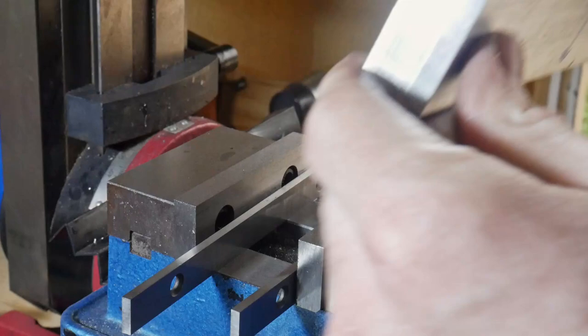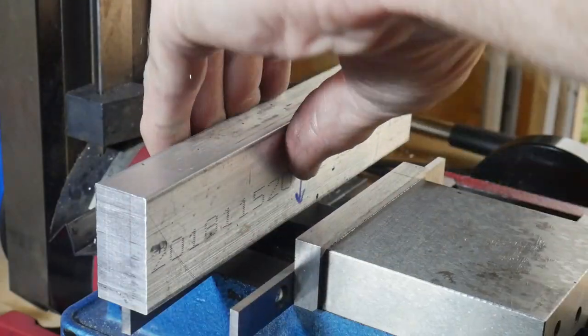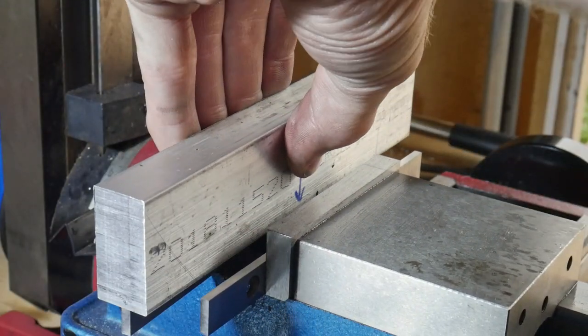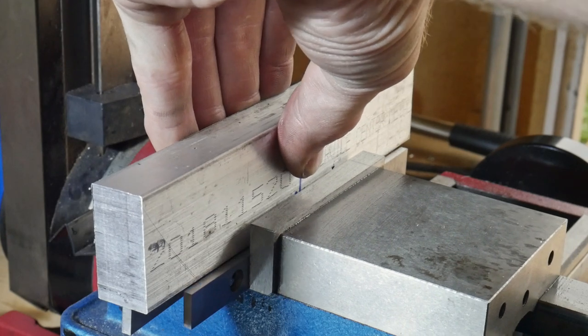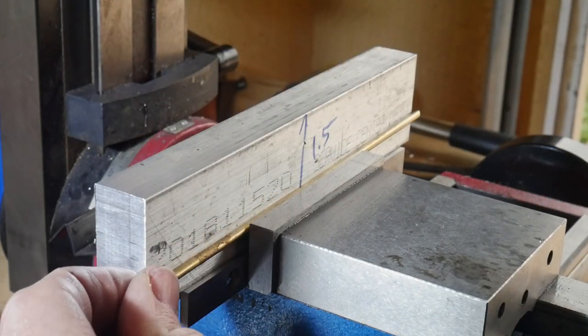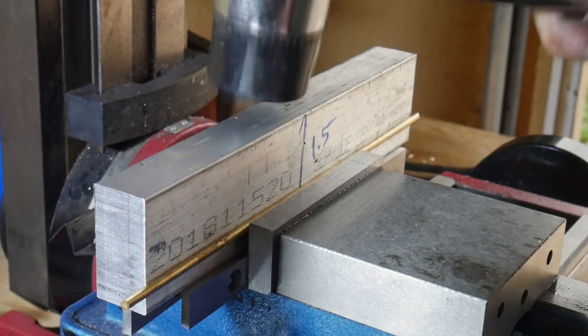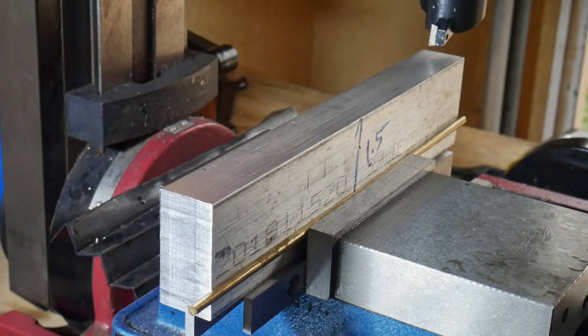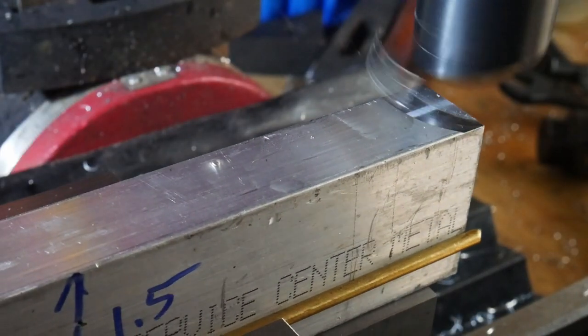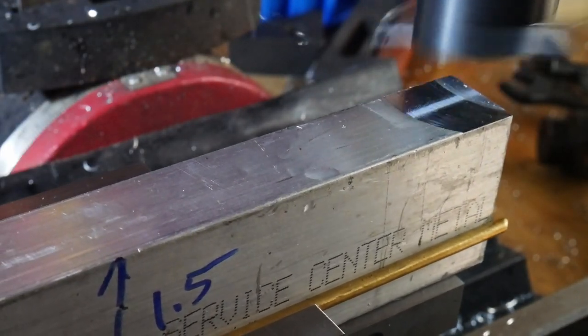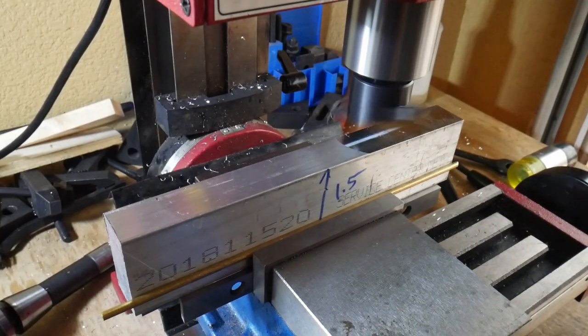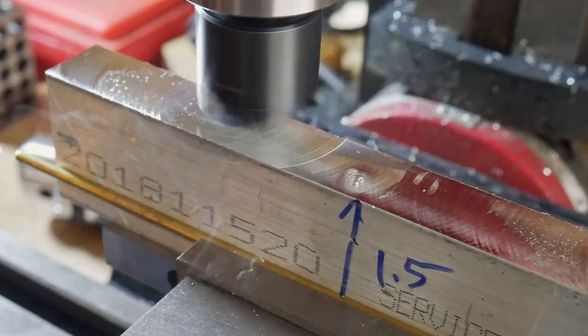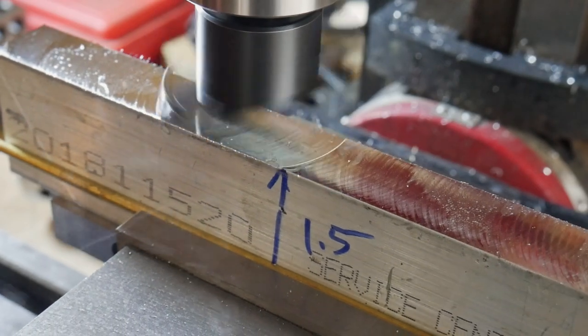As you just saw, I used a fly cutter to flatten one side of this bar. I then take that flattened side and put it up against my back jaw on the vice. This back jaw is the stationary jaw of the vice and it will be our reference point for squaring up this piece. Once we have the second surface machined, the two machined surfaces will be at 90 degrees from each other.